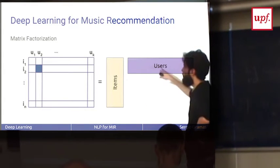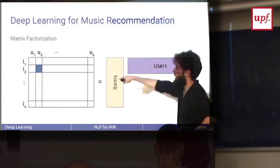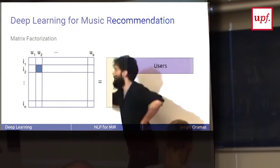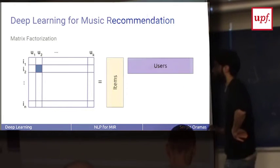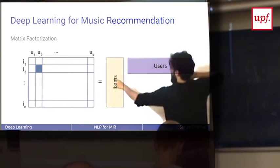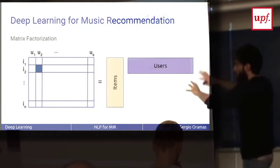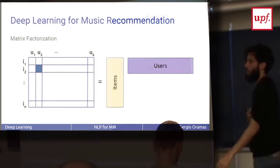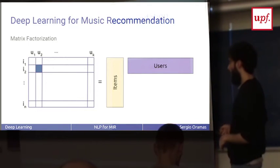One of item factors and the other of user factors. If you multiply these two matrices, you reconstruct the original matrix and you also fill the missing cells. There's a problem of optimization to learn these two matrices from the observed matrix. Once you have these, you can multiply them and get the recommendation. This is the state of the art.